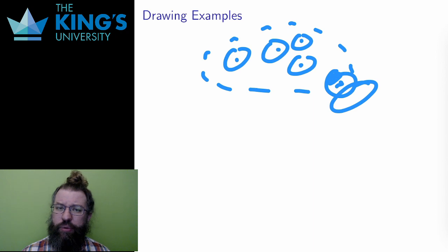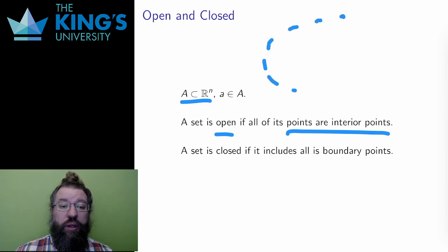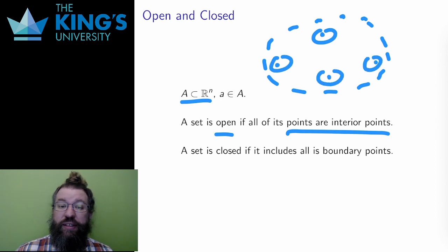How does this all help? Well, interior points and boundary points are the way to properly define open and closed sets. Again, let A be a subset of R^n. A set is open if all of its points are interior points. If I can draw a small circle or ball around any point and still be inside the set. Equivalently, an open set does not contain any boundary points.